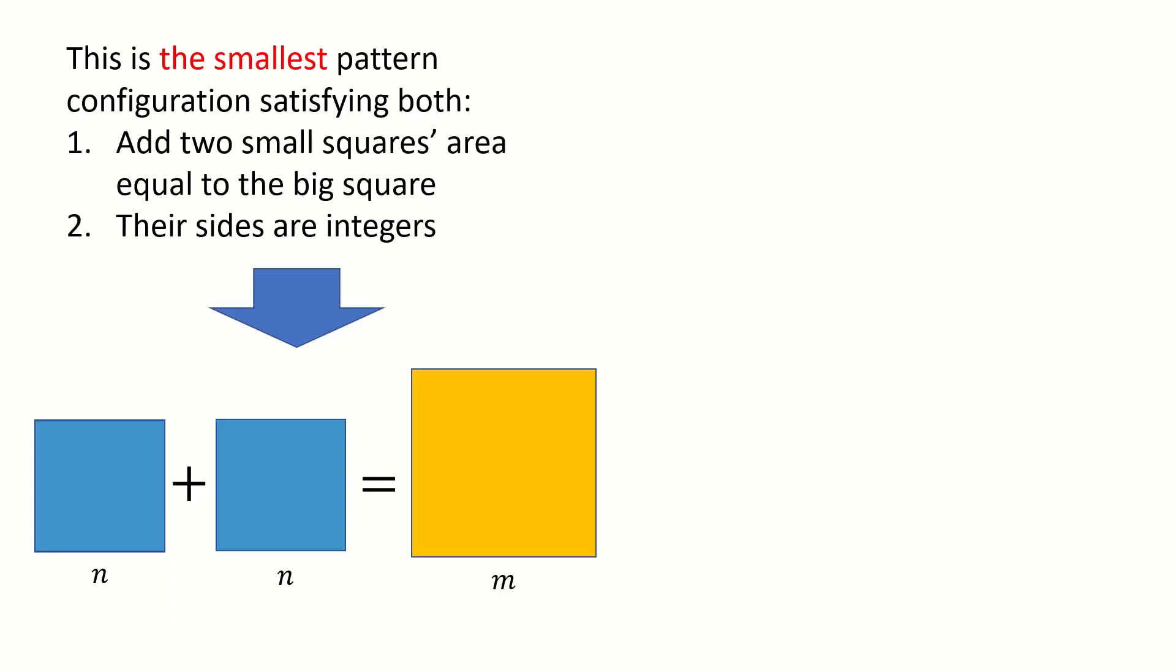And keep in mind, m is the smallest integer to make this equation hold. So that means this is the smallest pattern configuration satisfying both conditions.